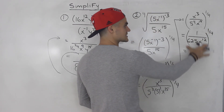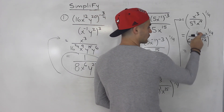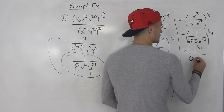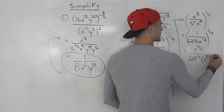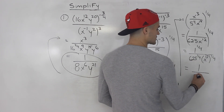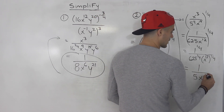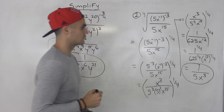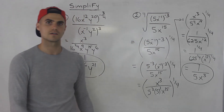Now since this is simplified, let's distribute that 1 over 4 inside the bracket, so everything goes to the power of 1 over 4. 1 to the power of anything is just 1. 625 to the power of 1 over 4 is 5 — the 4th root of 625 is 5. And 12 times 1 over 4 is 3, so this ends up being x to the 3. So the final answer is 1 over 5x cubed. I simplified the bracket first and then dealt with that exponent on the outside.